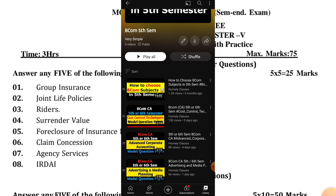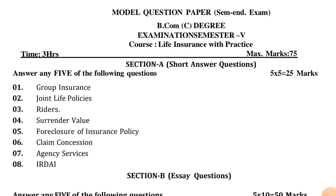In this video, BCom CF Life Insurance with practice model question paper. First, short questions: group insurance, joint life policies, riders, surrender value, foreclosure of insurance policy, claim, concession, agency services. There are 8 short questions and 8 essay questions — total 16 questions. As usual, two sets, total 16 questions. Prepare all 16 of them.